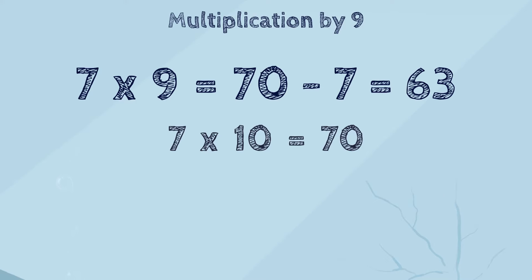Let's summarize this trick. To multiply a number by 9, you can multiply it by 10, and then subtract the number that you are multiplying by 9.